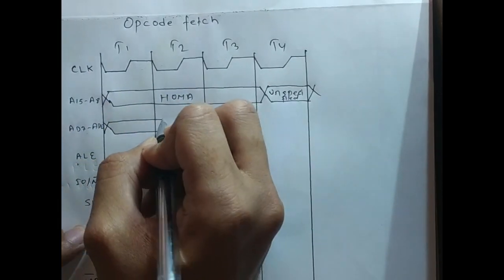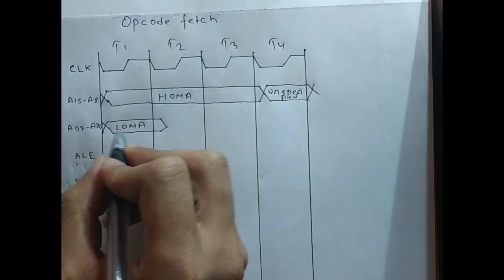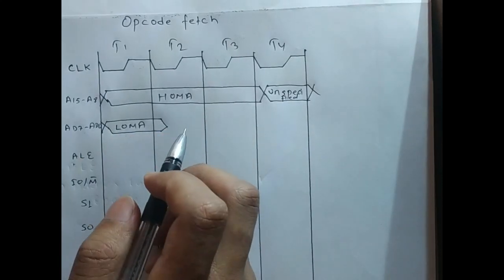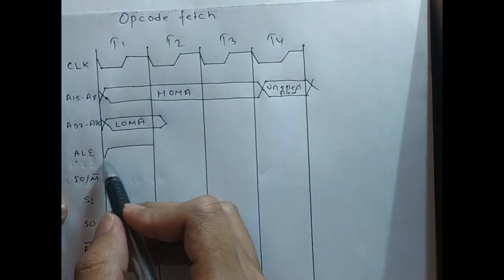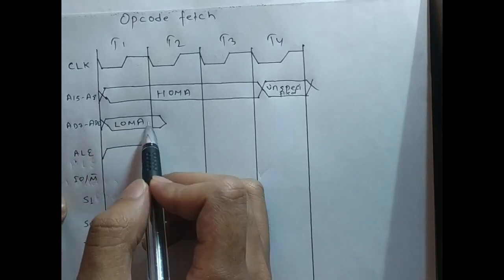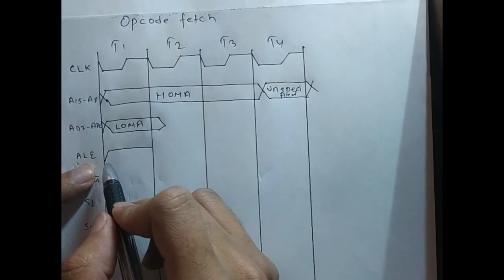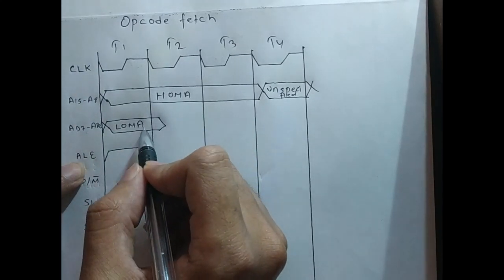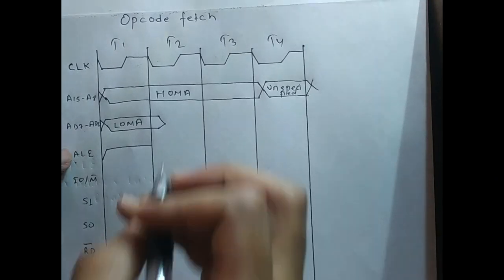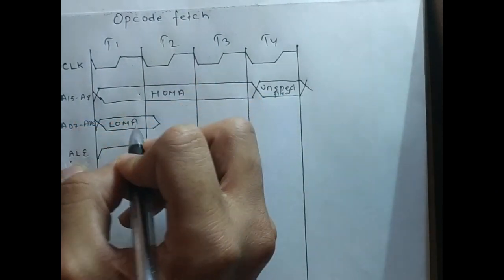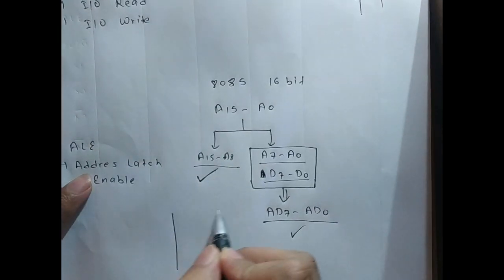When this bus is carrying the lower order address, we enable the latch by making ALE high. So the latch is enabled and captures the lower order address, storing it. Now we can use this bus as a data bus. We have now obtained both higher order address and lower order address.